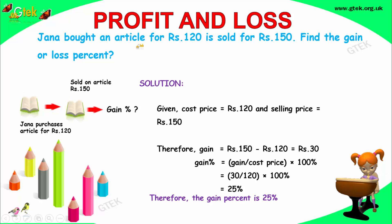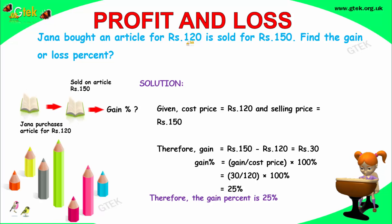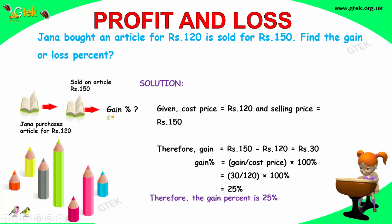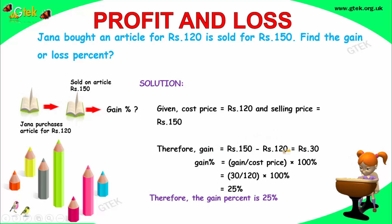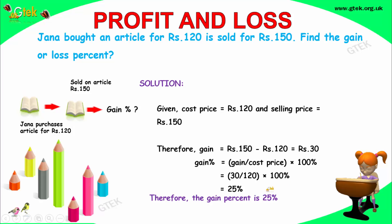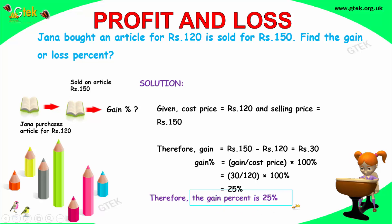Jana bought an article for rupees 120 and sold it for rupees 150 — find the gain or loss percentage. Since 150 is greater than 120, it's a gain. Gain equals selling price minus cost price, equal to 30. The gain percentage is 30 divided by the cost price 120 into 100, which gives 25 percent.